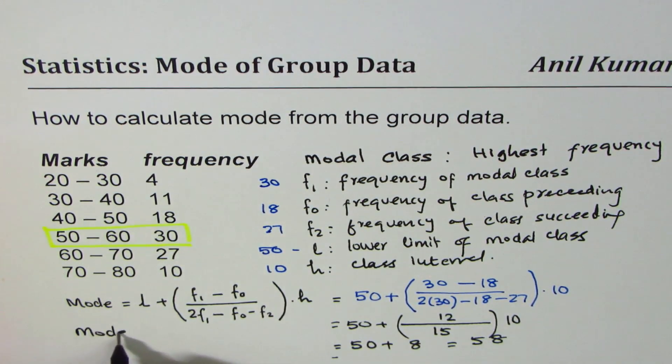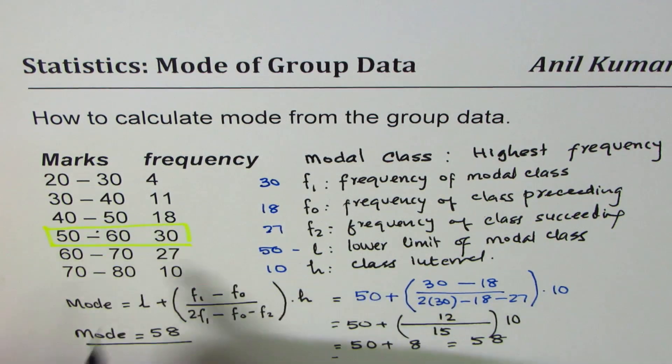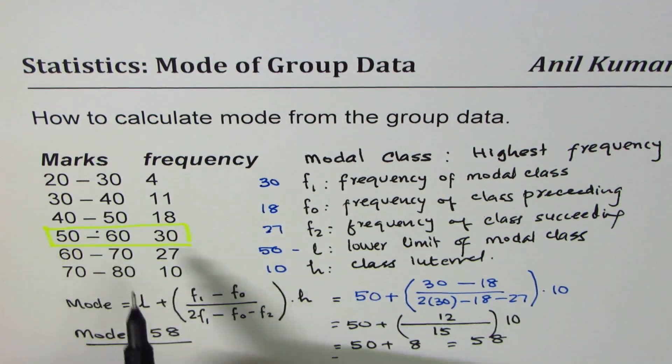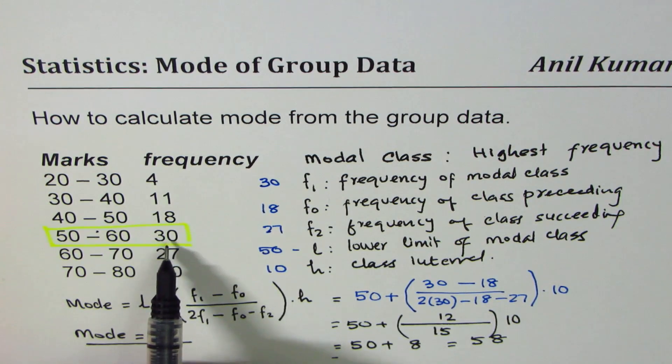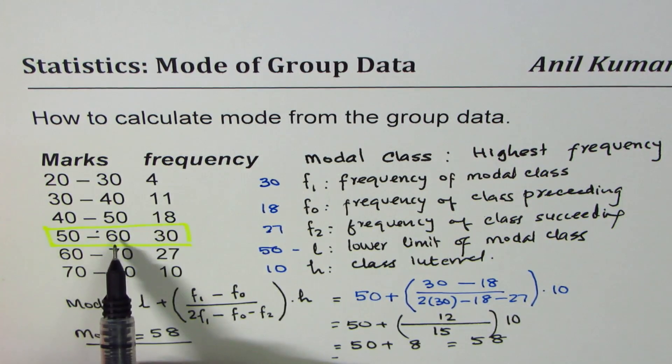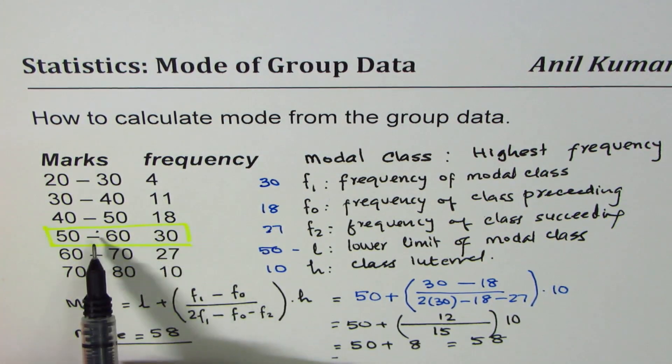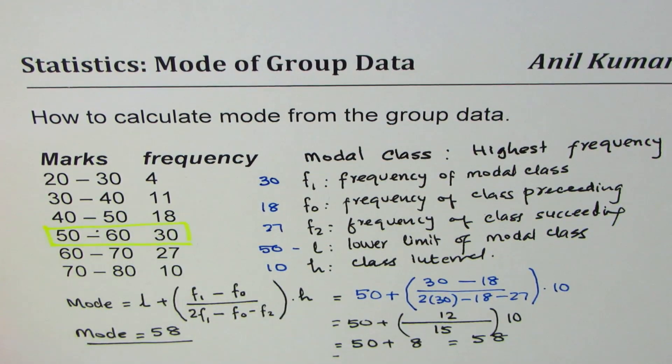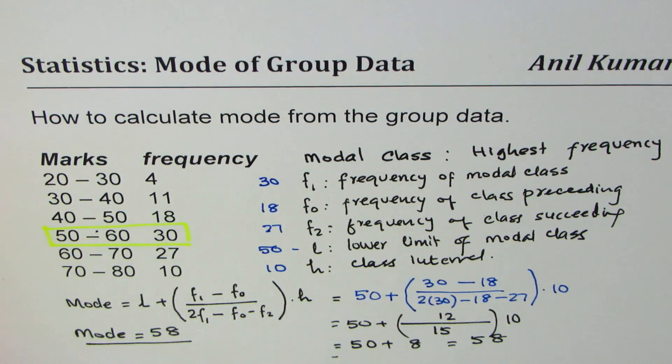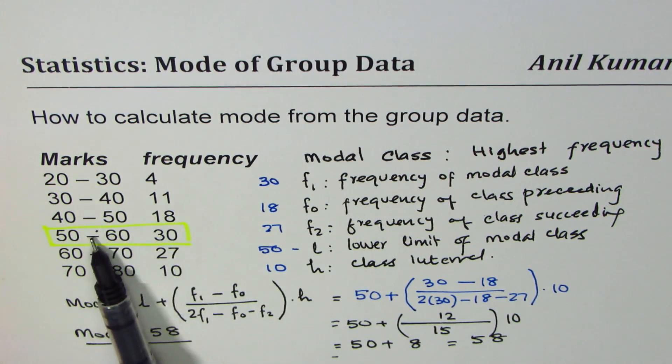So that is how we can calculate the mode from the grouped data. We calculated mode for the given data as equal to 58. So 58 is a value which is close to 60, the higher end. You could also think about that: between 50 to 60 we've got 30 elements. Since 30 is much more than 10, most of the elements may be lying closer to 60.